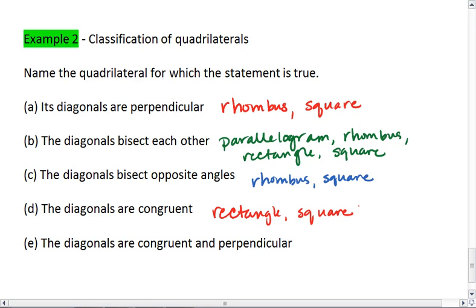Diagonals are congruent and perpendicular. This means our shape is both a rhombus and a rectangle, which makes it a square.